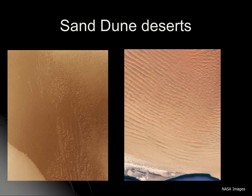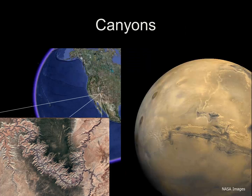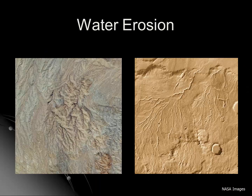We also know that several of these planets have sand dune deserts. One of these photographs is taken from Earth orbit, the other taken from Mars orbit. The image on the right is part of the Namib Desert in southern Africa. At least two of the planets have dramatic canyons. On the left, we can see Grand Canyon in Arizona. On the right, Valles Marineris on Mars. Valles Marineris is more than ten times wider and ten times longer than Grand Canyon in Arizona. We also have evidence of water erosion. The picture on the left is a satellite image of a drainage system in California. The picture on the right is a drainage system from Mars.